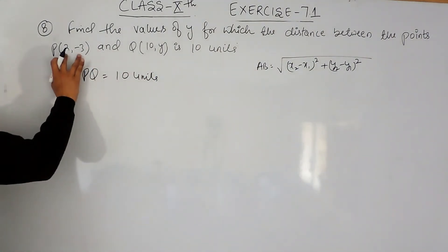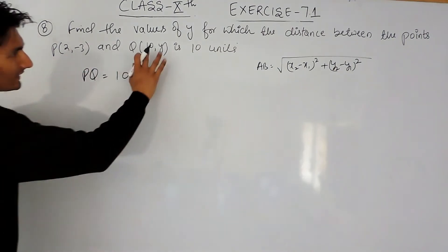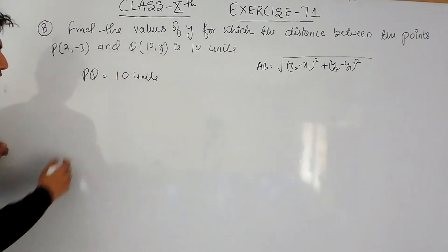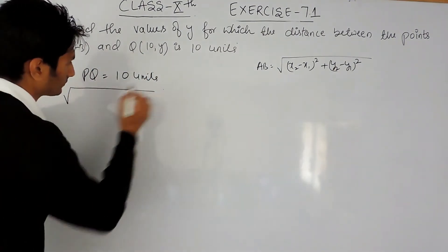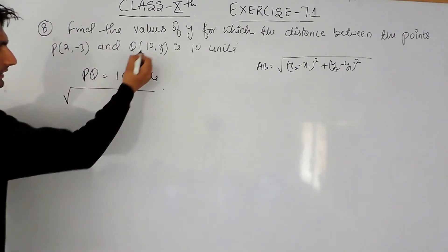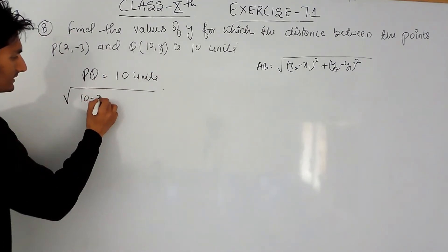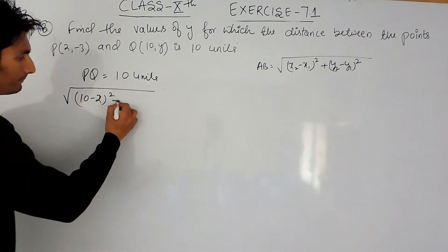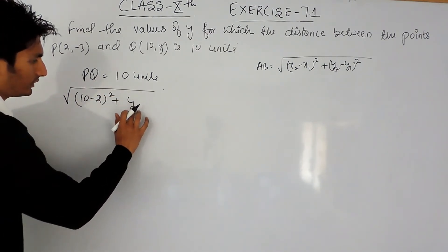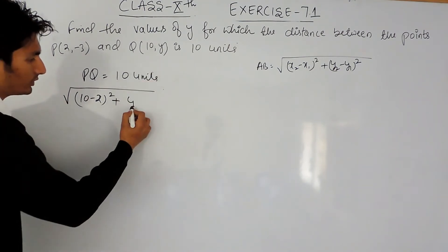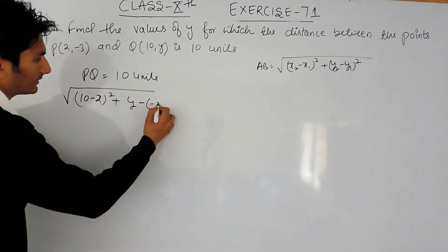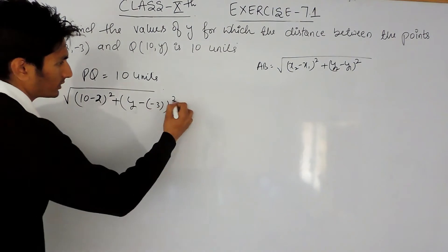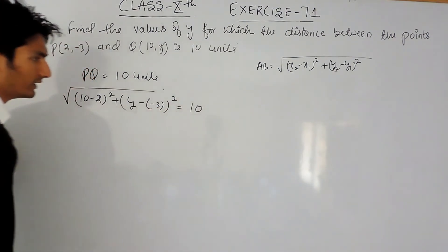For these two points, consider these as x1, y1 and these two as x2, y2. So the distance between P and Q will be x2 minus x1 whole square plus y2, and here our y2 is y minus minus 3 whole square, and that will be equal to 10.